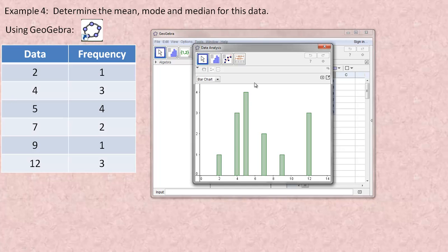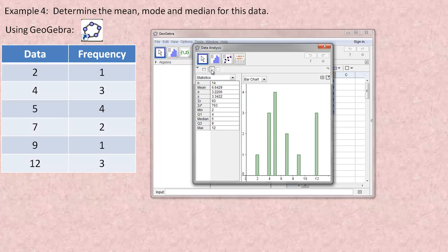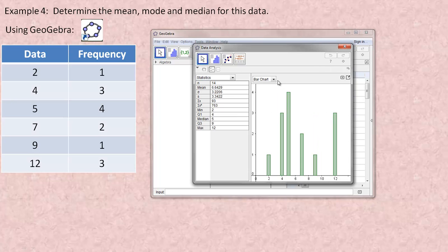This is showing you a bar graph. If you go into this symbol here, show statistics, here's my 14 numbers. I know there's 14 numbers because if you add these up, that's 14. The mean is 6.6429. We're not going to talk about standard deviations. The median is 5. This doesn't give you the mode. To get the mode, look at the graph. There's four 5s, so the mode is 5. Remember, the mode is the most frequently occurring number. That's how you can use GeoGebra to calculate those statistics.